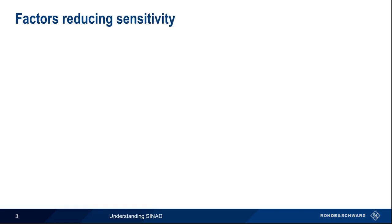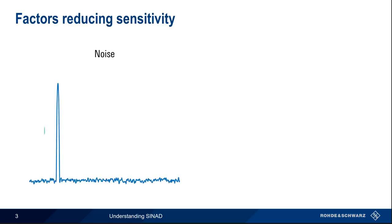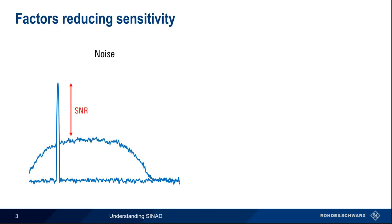There are two main factors that reduce receiver sensitivity. The first of these is noise. The level of the signal compared to the level of noise is usually expressed as the signal-to-noise ratio, or SNR. A higher SNR means that the desired signal pokes up more above the noise, and this makes it easier for a receiver to detect and or demodulate the signal. As noise increases, signal-to-noise ratio decreases, and this makes it harder for the receiver to detect the signal.